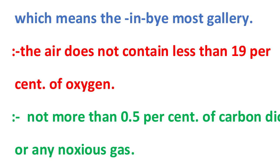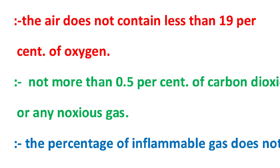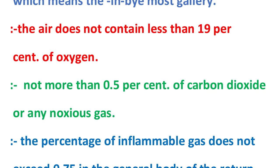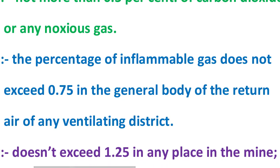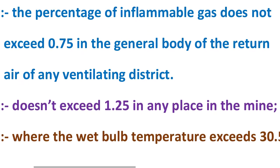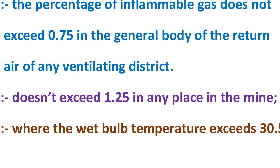The carbon dioxide or noxious gases in the return air must not be more than 0.5 percent. In the general body of return air, inflammable gas must not exceed 0.75 percent in any ventilation district. Furthermore, inflammable gases must not exceed 1.25 percent in any place in the mine.